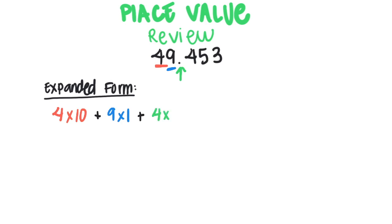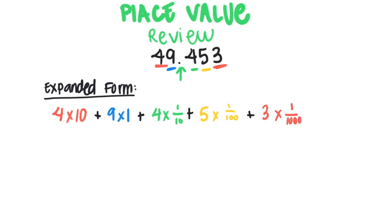We have 4 times one tenth — that's the tenths place value. Then I add 5 times one hundredth for our hundredths place value. Finally, I add my last place value, which is thousandths, so I write 3 times one over one thousand — because it's in the thousandths place. And that is how we write a number in expanded form.